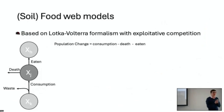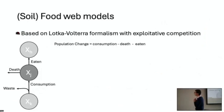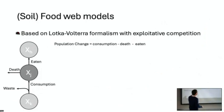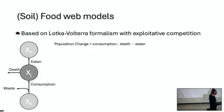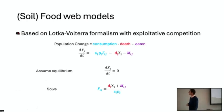For those interested in the workings behind this — there's only one slide with math, I promise. Soil food web models are built on the idea that the change in the population of organisms within the soil is a summation of what they eat, how quickly they die, and how much they're eaten by other things.